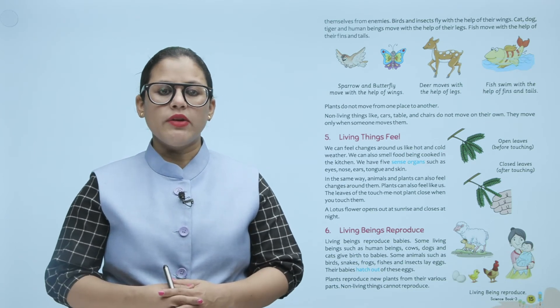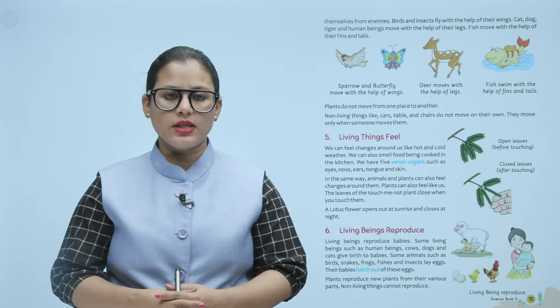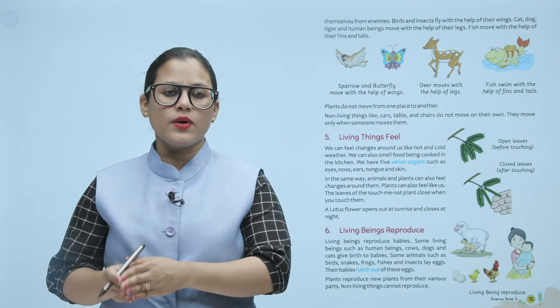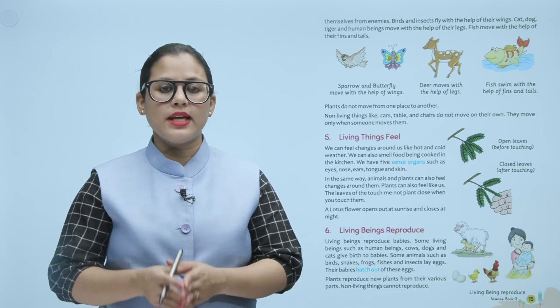Number six: living beings reproduce. Living beings reproduce babies. Some living beings, such as human beings, cows, dogs, and cats, give birth to babies. Some animals, such as birds, snakes, frogs, fish, and insects, lay eggs — their babies hatch out of these eggs. Plants reproduce new plants from their various parts. Non-living things cannot reproduce.